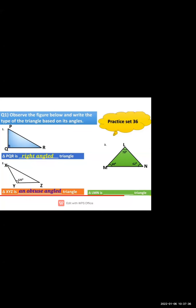The third figure has all angles under 90 degrees: angle L is 70 degrees, angle M is 48 degrees, and angle N is 62 degrees. Since all angles are under 90 degrees, it is known as an acute angle triangle.